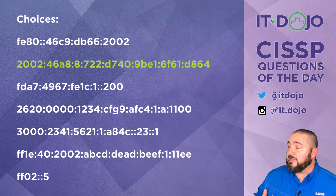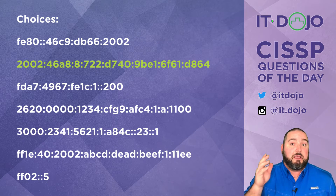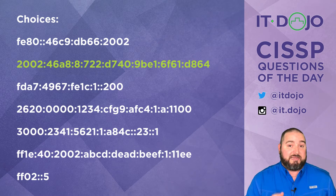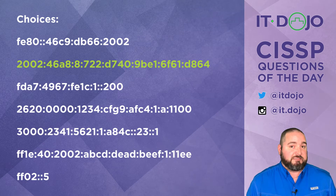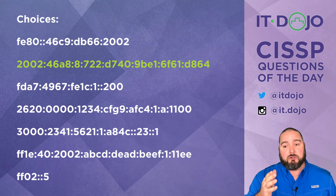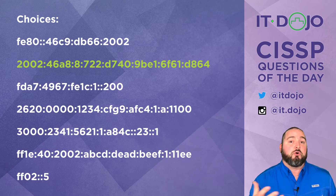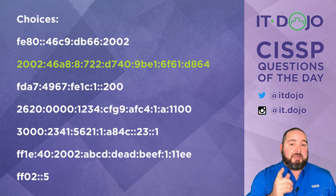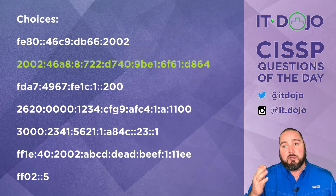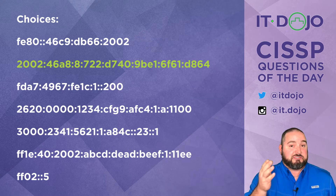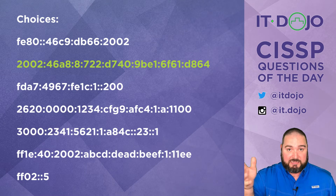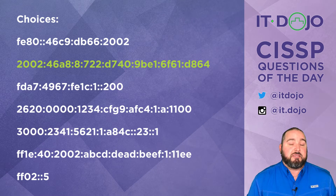Third choice: FDA7 colon something something — no. Anything that is FD is actually part of the unique local IPv6 address space. The unique local address space is sort of a locally routable yet still private IPv6 address space available for use within your own internal organization. Anything that starts with FC00::/7, expressed as FD-anything, is going to be unique local and is not going to be routed on the global internet. So that is not one of the correct answers.